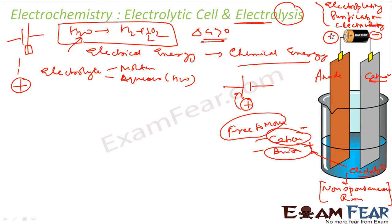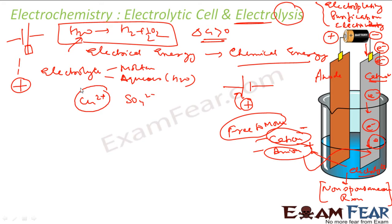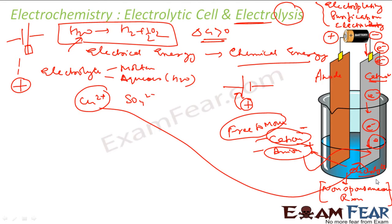Since the negative terminal has a lot of electrons, electrons flow toward the cathode. With lots of electrons at the cathode, the cations in the electrolyte are attracted toward it. For example, in copper sulfate solution we have Cu²⁺ and SO₄²⁻ ions. The Cu²⁺ cations are attracted toward the cathode because the cathode is negatively charged, and electrons are transferred from the cathode to Cu²⁺.